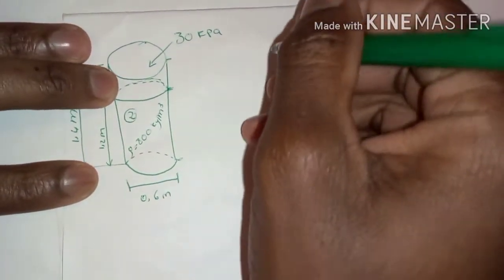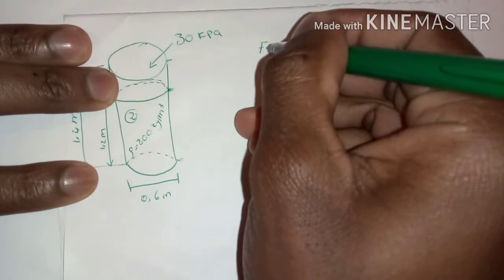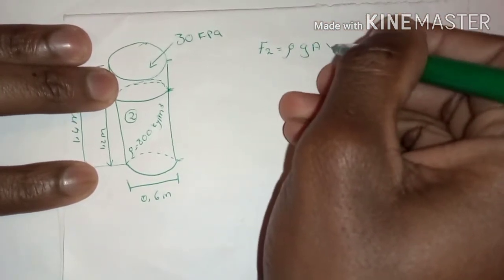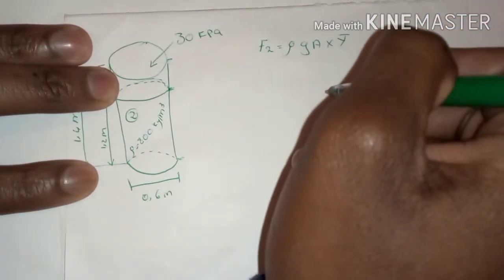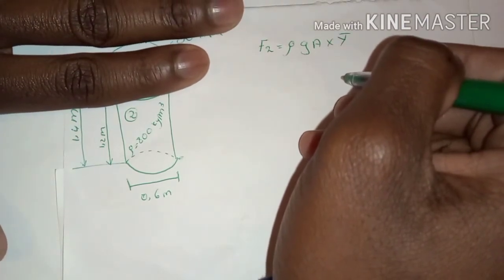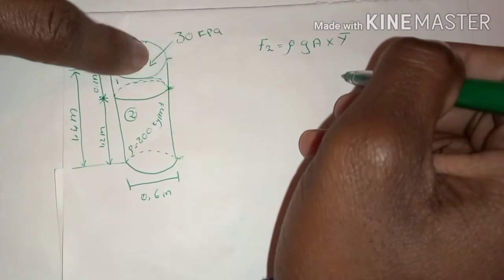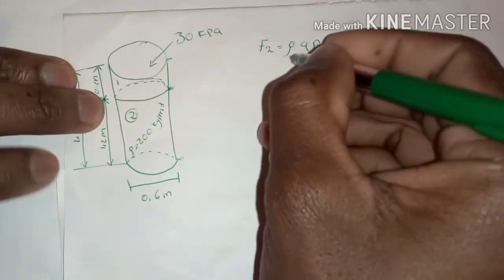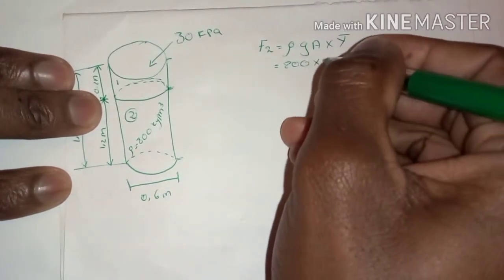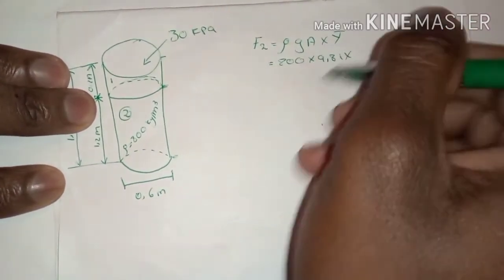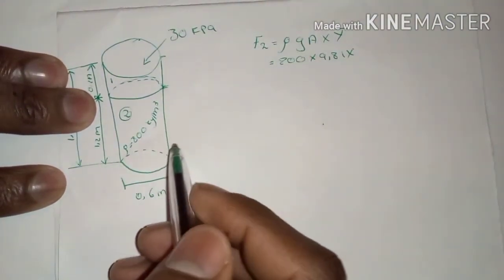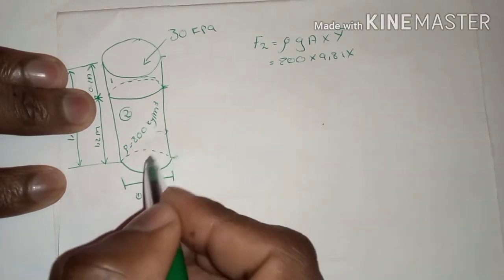To calculate the hydrostatic force for fluid number two, we use the formula: F₂ = ρ·g·A·ȳ. We are still dealing with the first section from the bottom, labeled number two — not considering section one yet. Our rho is 800 kg/m³ and gravitational acceleration is 9.81 m/s².